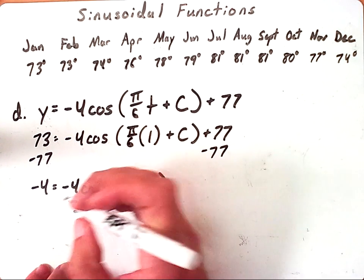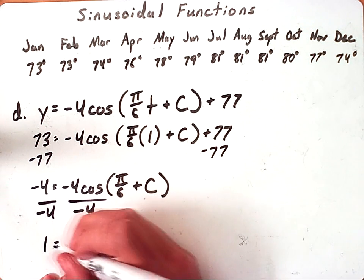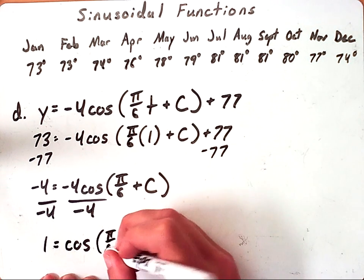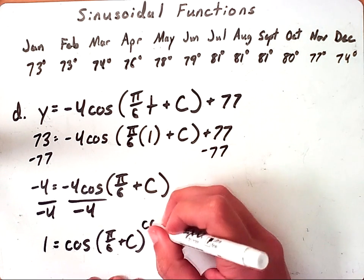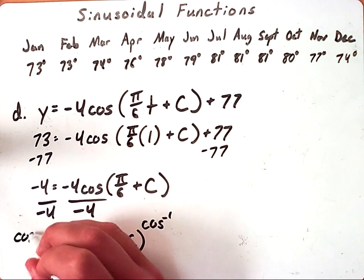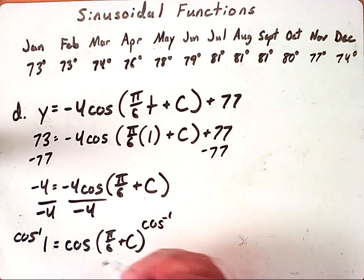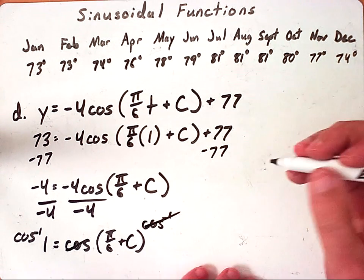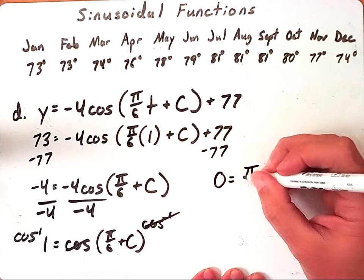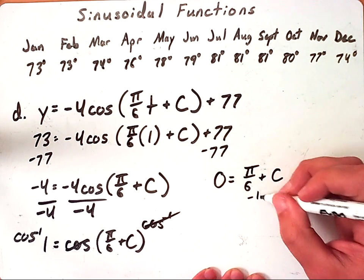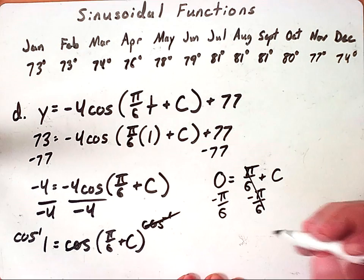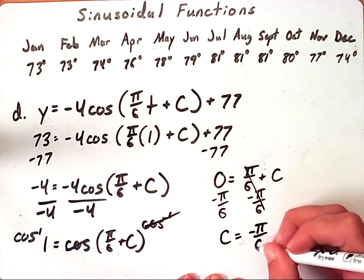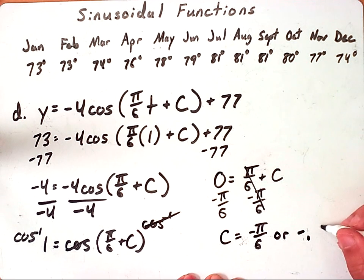Now I would divide both sides by negative 4 which is going to leave me with 1 equals the cosine of π over 6 plus C. I would want to take the arc cosine of both sides to get rid of the cosine, and doing that cancels out my cosines here. The arc cosine of 1 is going to give me 0, so 0 now equals π over 6 plus C. Then I just subtract both sides π over 6, cancel it out here, and so I'm going to be left with C equals negative π over 6 or negative 0.52 if I wanted to write it out in decimal form.